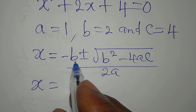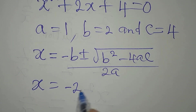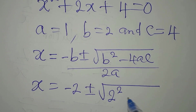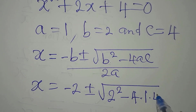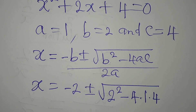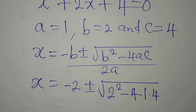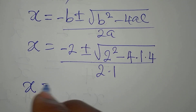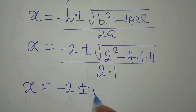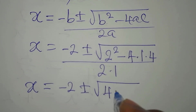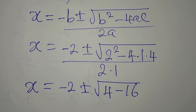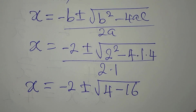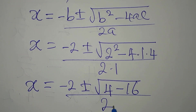Substituting, x equals minus 2 plus or minus the square root of 2 squared minus 4 times 1 times 4, divided by 2 times 1. This gives x equals minus 2 plus or minus the square root of 4 minus 16, divided by 2. Since 2 squared is 4 and 4 times 1 times 4 is 16, and 2 times 1 is 2.